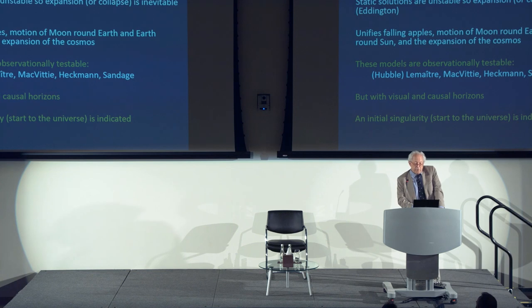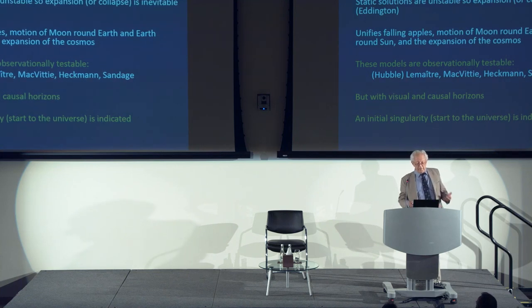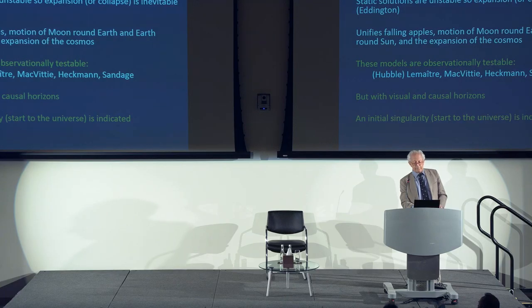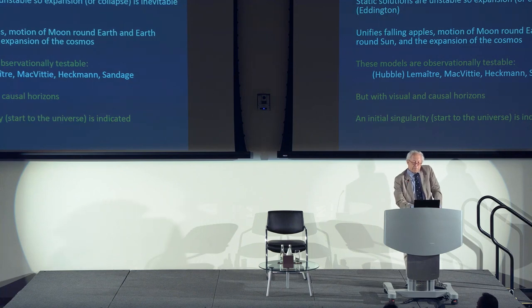Friedmann and Lemaître broke out of that static-universe straitjacket and showed that dynamic models of the cosmos are possible. Eddington showed that static solutions are unstable, so expansion or collapse is inevitable. These expanding universe models unify falling apples, the motion of the moon and Earth, and the expansion of the cosmos — all governed by gravity. Dynamic models are observationally testable, which turns cosmology from philosophy into science.